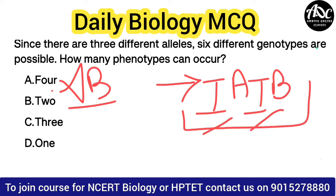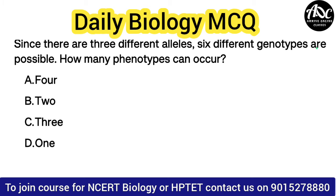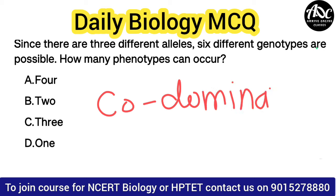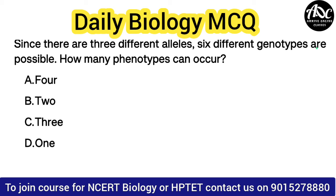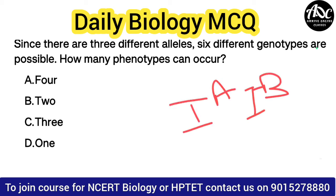In AB blood group, both genes express themselves, and AB blood group is an example of co-dominance, which we learn in genetics. In co-dominance, both genes show their effect — the dominant-recessive concept does not apply.